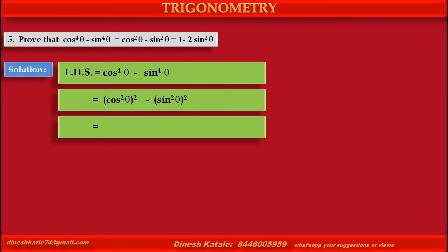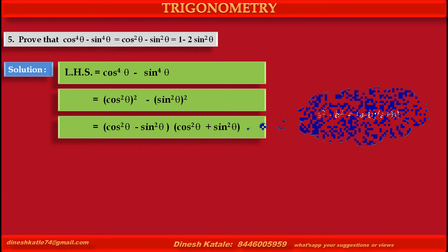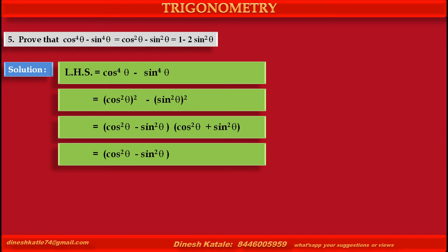By using the identity a square minus b square is equal to a minus b into a plus b, we can factorize the above expression as: in the first bracket, cos square theta minus sin square theta, into in the second bracket, cos square theta plus sin square theta.